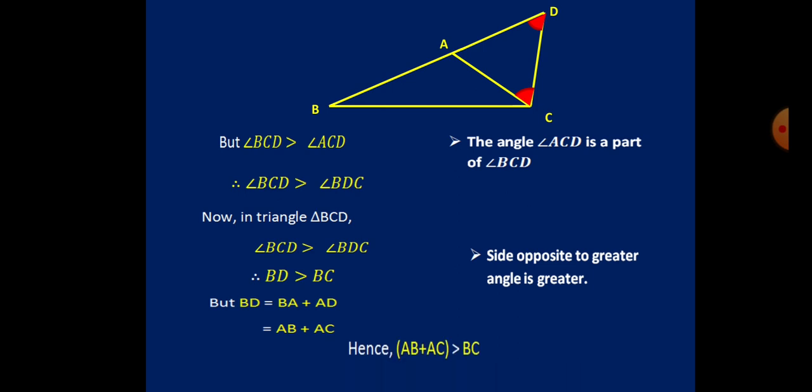Our proof is done: AB + AC is greater than BC. We have substituted the value of BD as AB plus AC in that inequality. Students, I suggest you pause the video and study what we have covered so far, as theorem reading can be challenging. Pause and review before continuing.